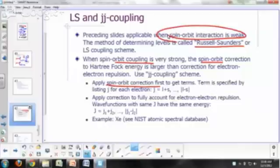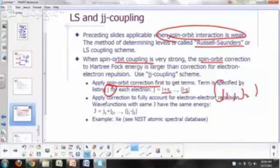You specify the term by listing the J for each electron. The possible J's for each electron would be L plus S all the way to L minus S. So you specify a term by specifying J1, J2. Let's say you have two electrons. Instead of specifying big L and big S for the term, your term will be J1 and J2.